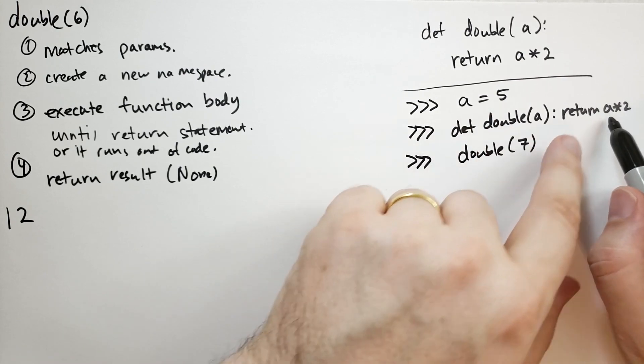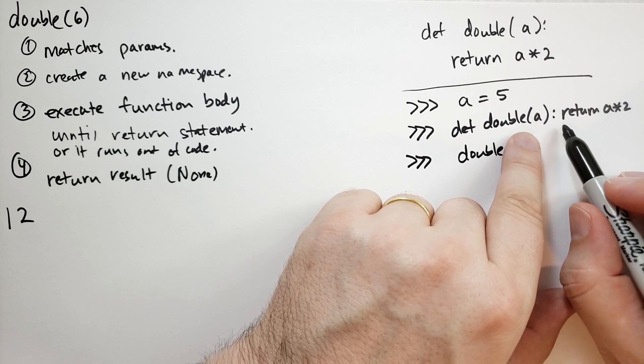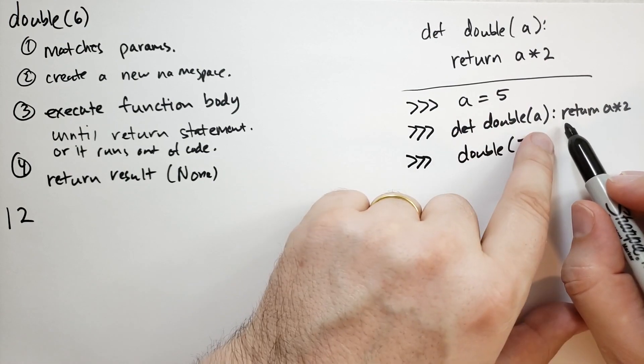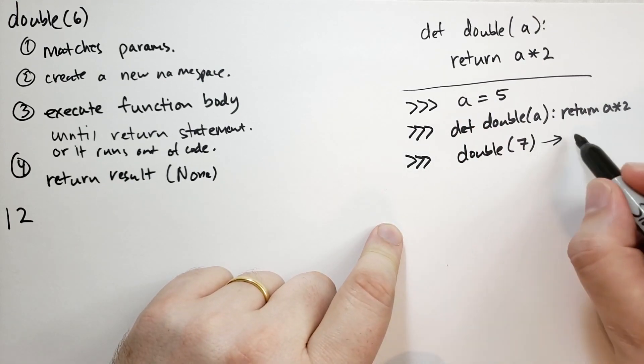In this case, well for all function cases, it's going to first look at the local scope, the local namespace. And then if it can't find it there, then it'll go to the global scope. So in this case, this will evaluate to 14.